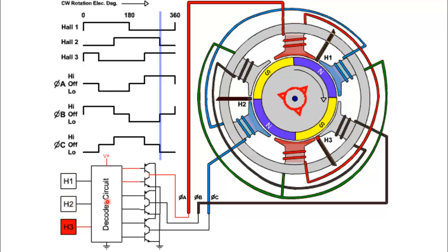These are the hall effect sensors used for accurate position and speed feedback. In this way, the electronic controller knows the current position of the motor and will energize the next pair of coils in order to rotate the motor.